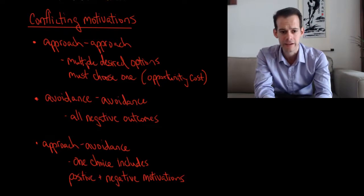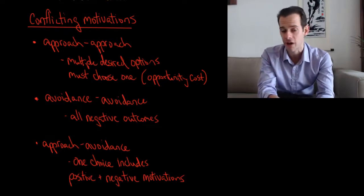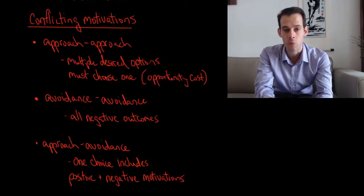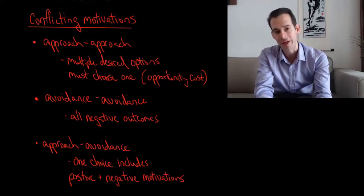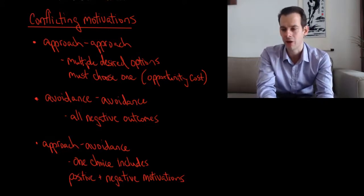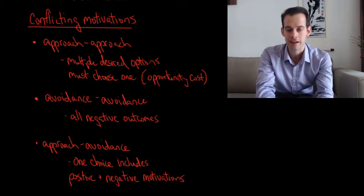Another way we can have a conflict is what's called an avoidance-avoidance conflict. This is a case where we have all negative outcomes. We don't want any of the choices and yet we have to have one of them. You might think about when you have to do your chores at home and you might say, I can vacuum the floor, which I don't want to do, or I can clean the windows, which I don't want to do.